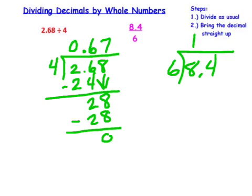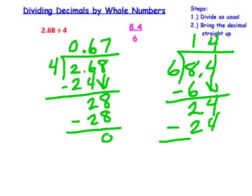6 goes into 8, 1 time. Subtract down and you get 2. Drop your 4. 6 goes into 24, 4 times. Subtract down and you're done except for bringing up your decimal. It will come straight up, so your answer is 1.4.